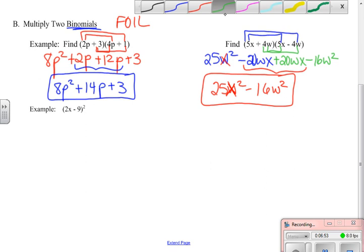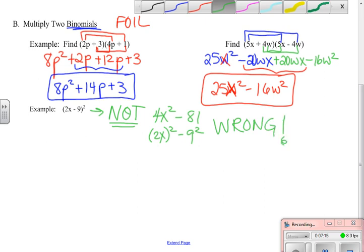It is not 4x squared minus 81. We do not just say 2x squared minus 9 squared. That is very wrong. We have to think to ourselves, what does a quantity squared mean? And a quantity squared really means that I have two of them being multiplied together. Because remember, exponents is a shorthand notation for multiplication.